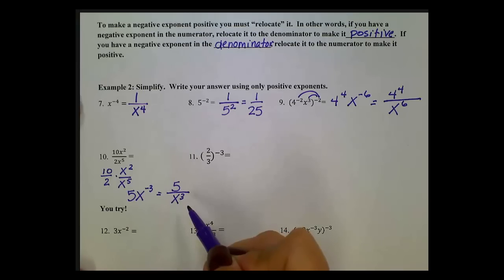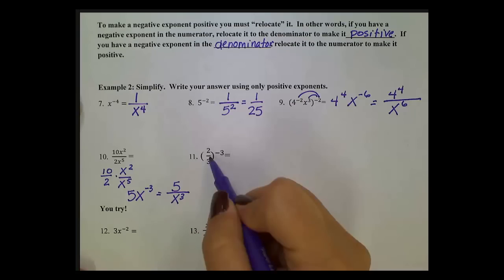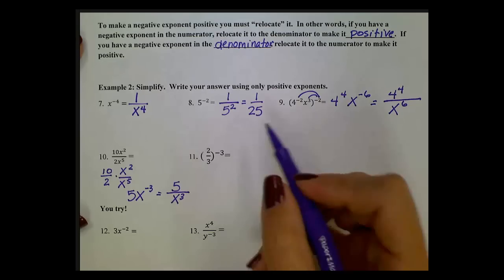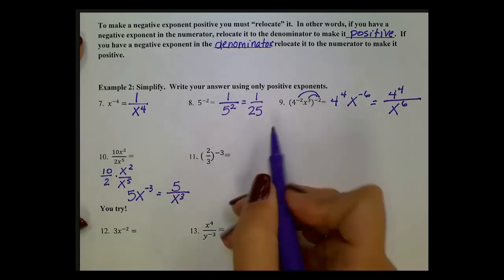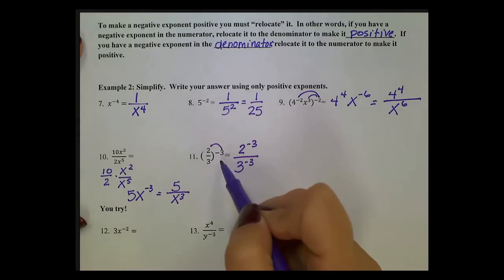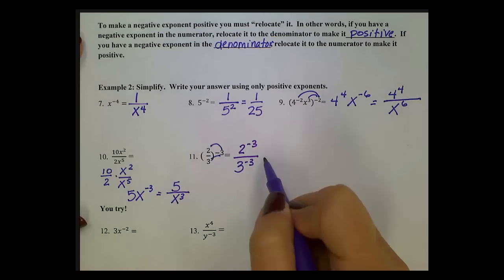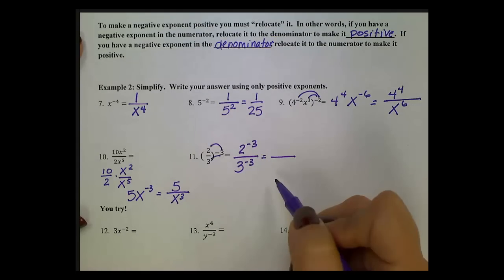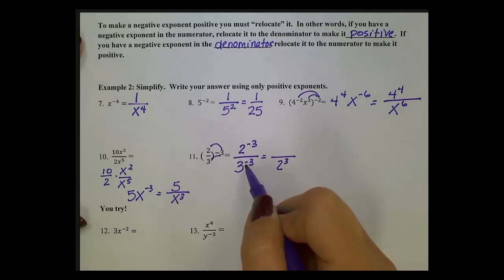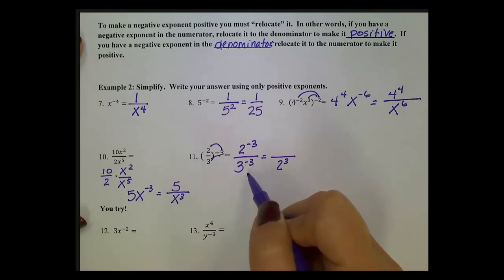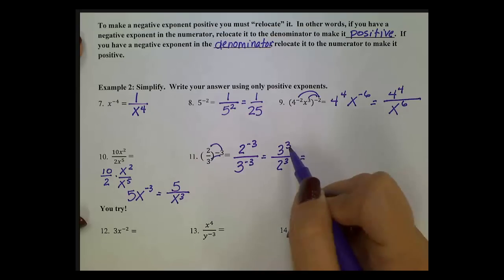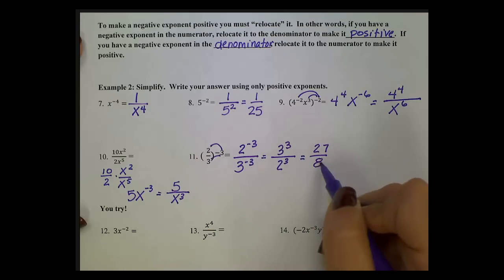In number 11, I have 2 thirds to the negative 3 power. Option 1: everything inside gets raised to the negative 3rd power, giving us 2 to the negative 3rd in the numerator and 3 to the negative 3rd in the denominator. I can't have negative exponents, so I make a fraction bar and relocate. 2 to the negative 3rd moves to the denominator; 3 to the negative 3rd is already in the denominator, so it relocates to the numerator. 3 to the 3rd is 27 and 2 to the 3rd is 8, so we get 27 eighths.